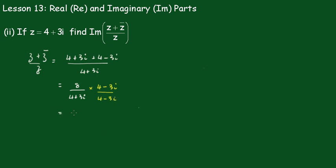This becomes 8 outside of 4 minus 3i, all over 16 plus 9, which equals 25.